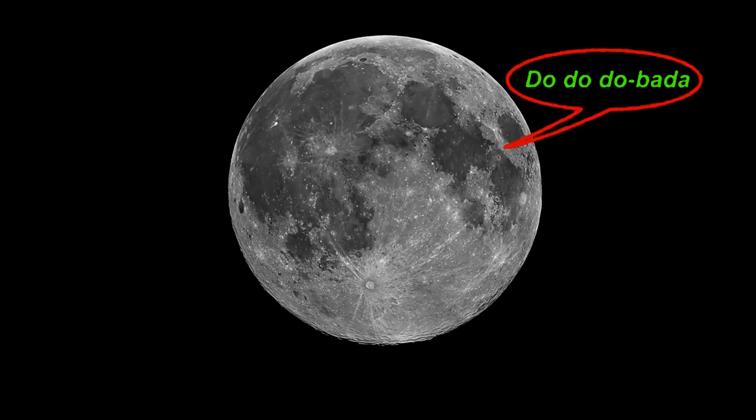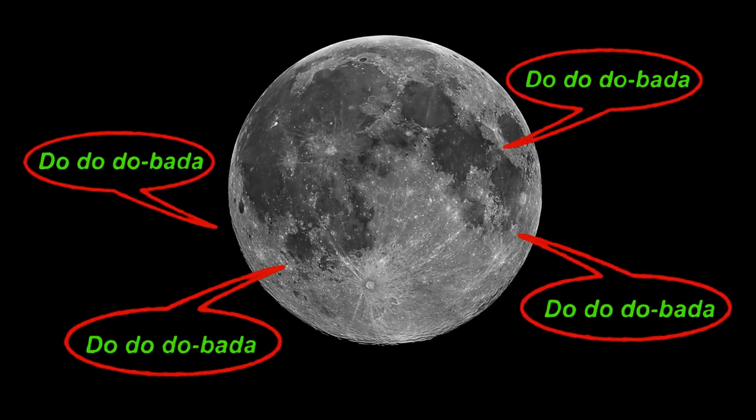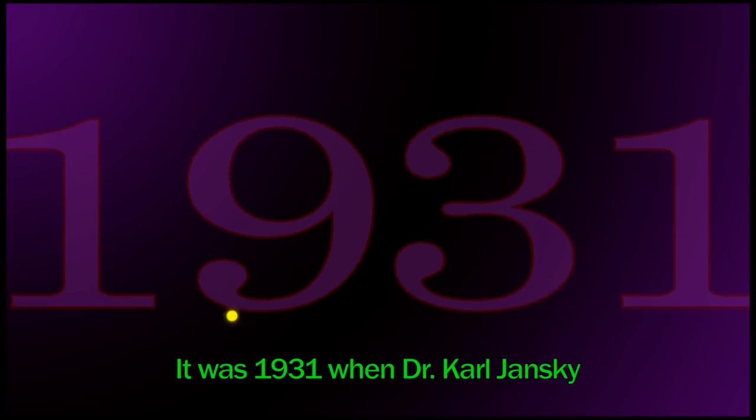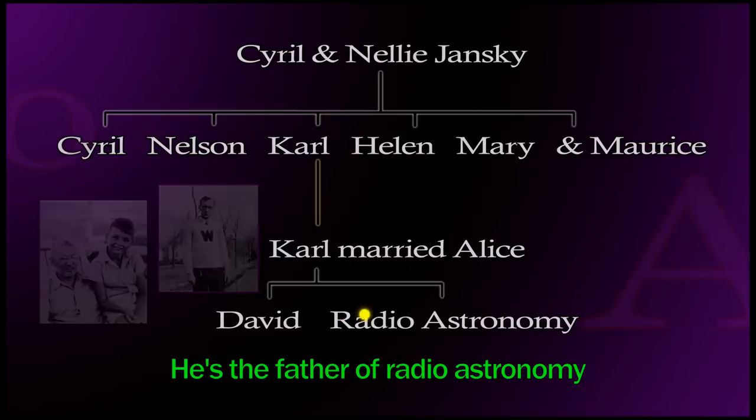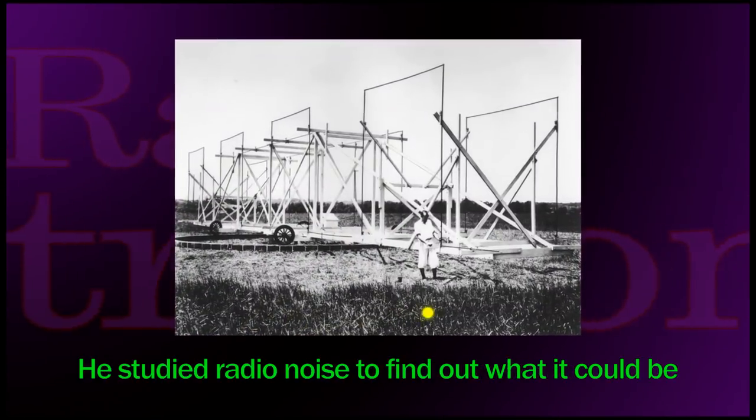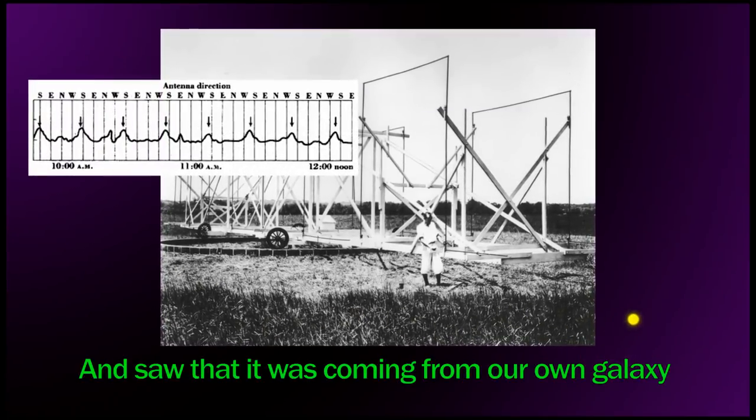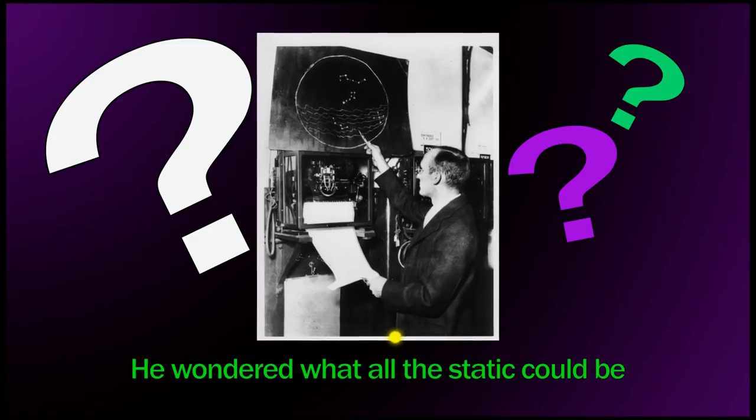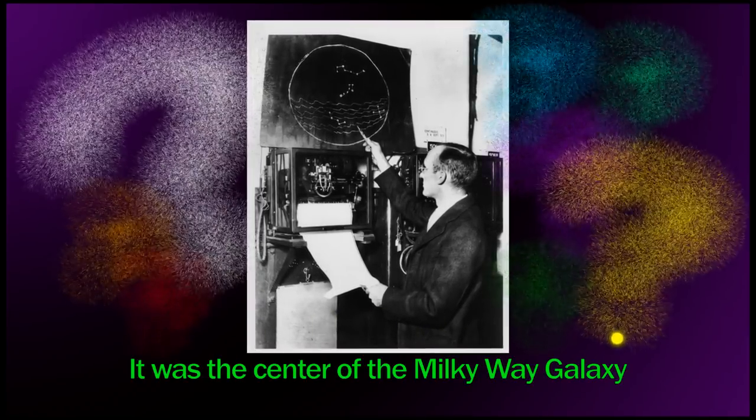It was 1931 when Dr. Karl Jansky. He's the father of radio astronomy. He studied radio noise to find out what it could be and saw that it was coming from our own galaxy. He wondered what all of that static could be. It was the center of the Milky Way galaxy.